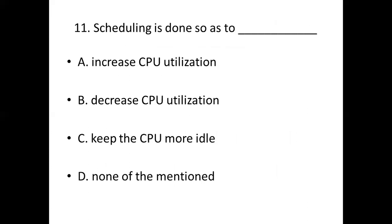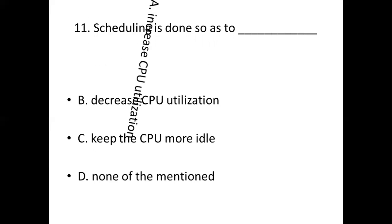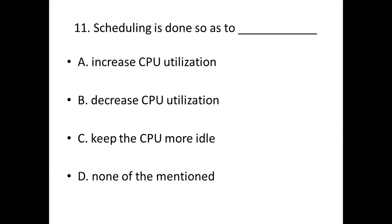Eleventh bit: Scheduling is done so as to dash. Option A: Increase CPU utilization. Option B: Decrease CPU utilization. Option C: Keep the CPU more idle. Option D: None of the mentioned. Answer: Option A — Increase CPU utilization.